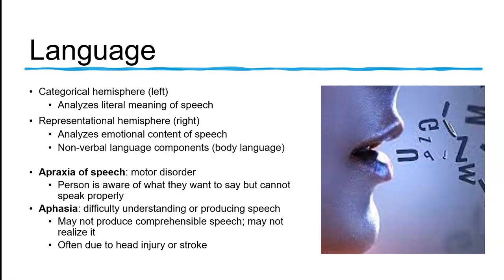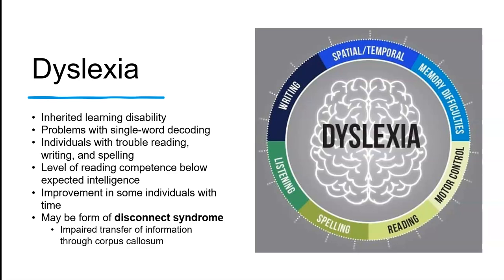Aphasia can very often be due to an injury to the head or a stroke. Dyslexia is an inherited learning disability where you have problems with single-word decoding. People with dyslexia usually have trouble reading but also have problems writing and spelling accurately. They may be able to recognize letters normally, but they demonstrate a level of reading competence that is way below their level of intelligence.